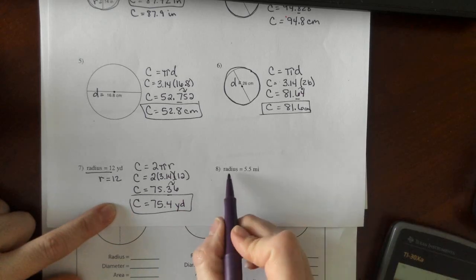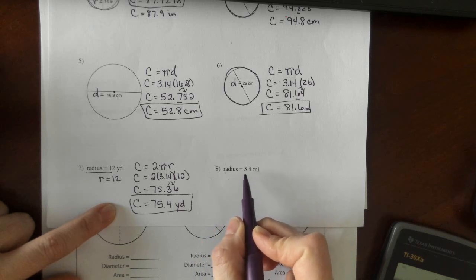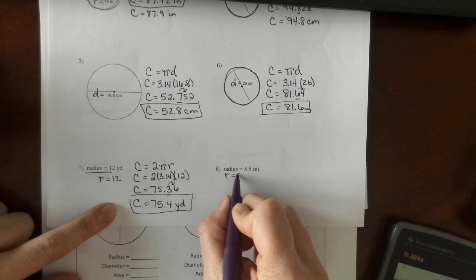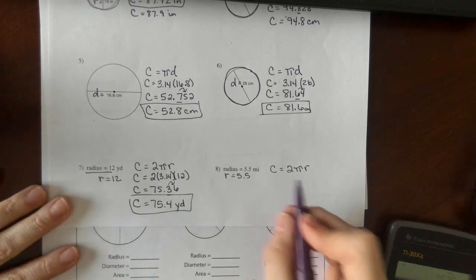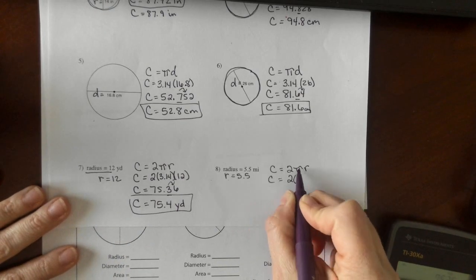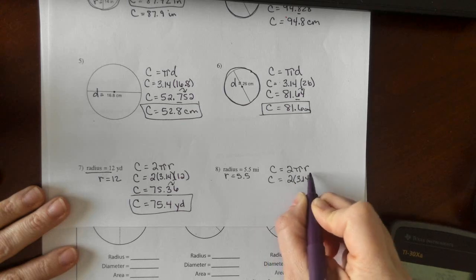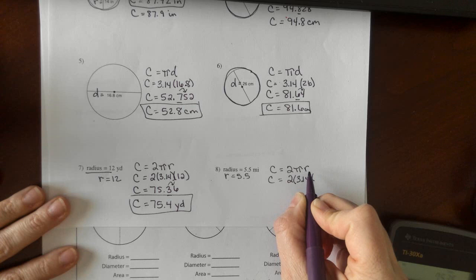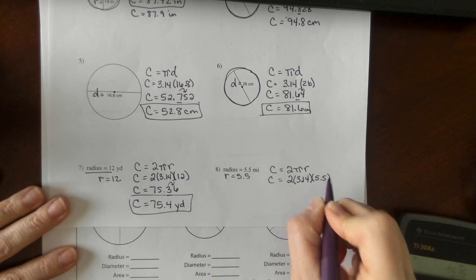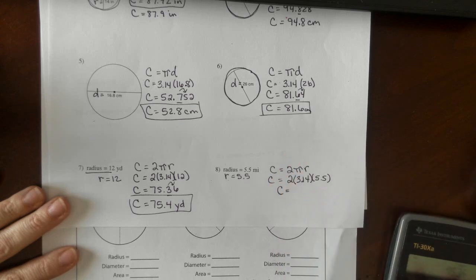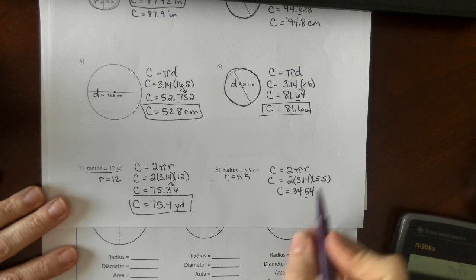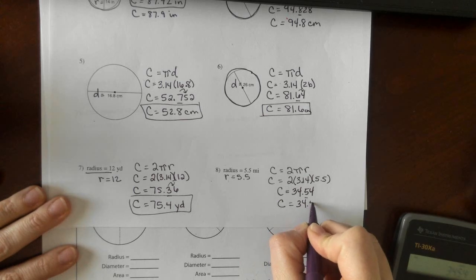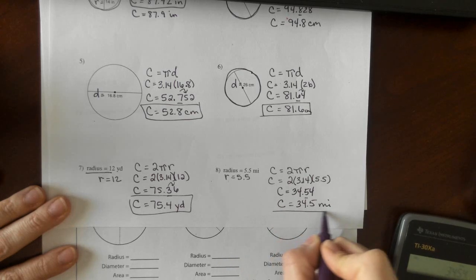For number 8, we have a radius of 5 and 5 tenths miles. Since we know the radius is 5.5, 2 times pi times radius. I'm going to take 2, the value of pi, 3.14 that we're going to use, times the radius, and the radius is 5.5. Multiply those out. We get 34 and 54 hundredths. Rounding to the nearest tenth, that gives us 34 and 5 tenths miles.